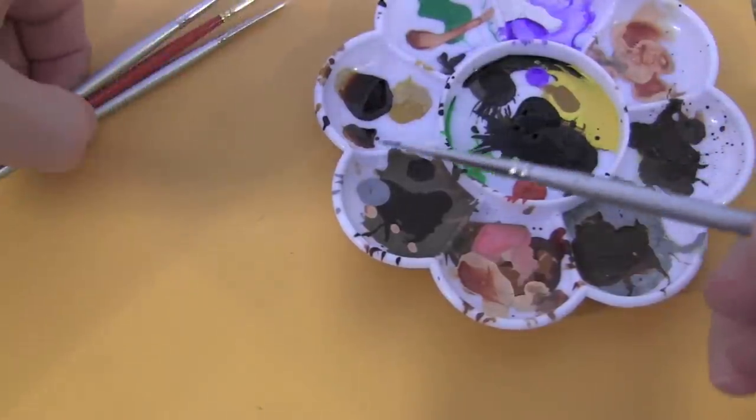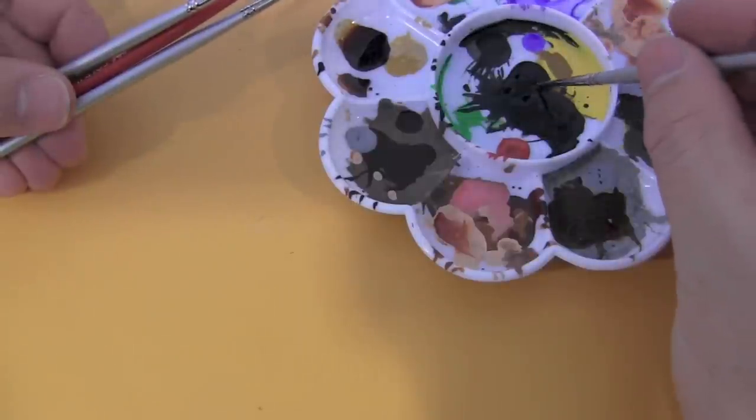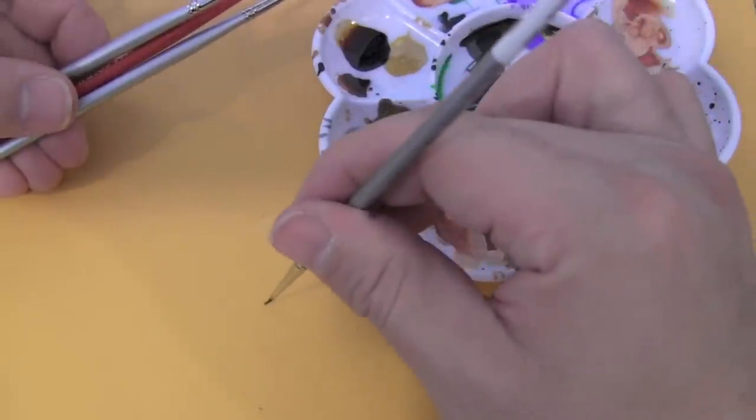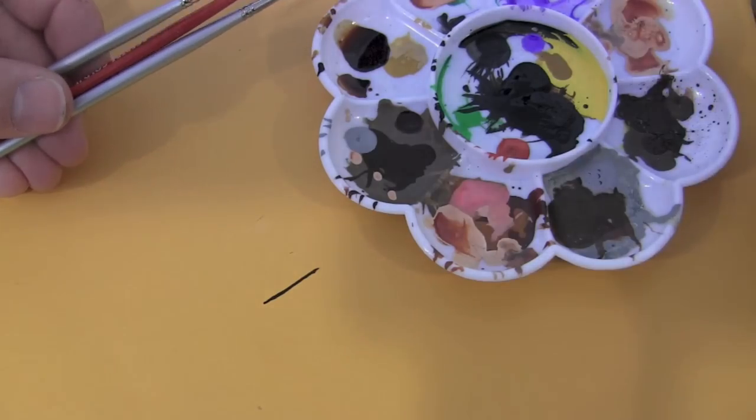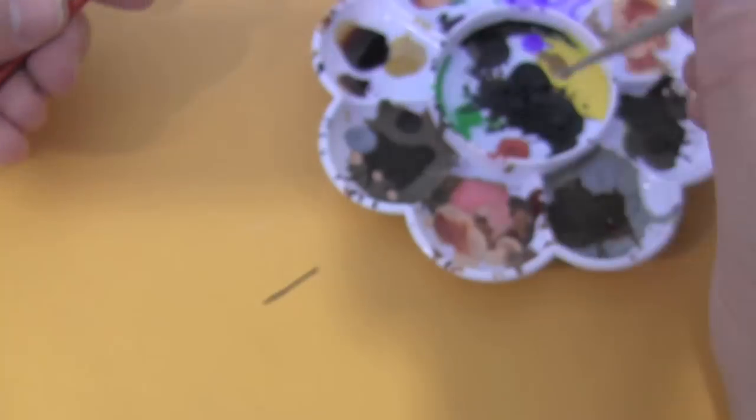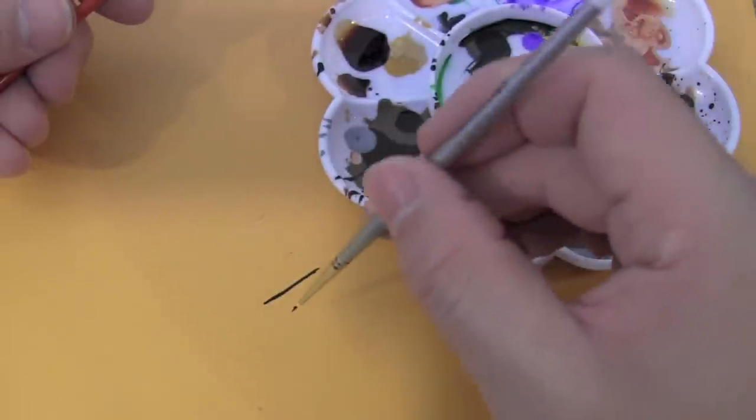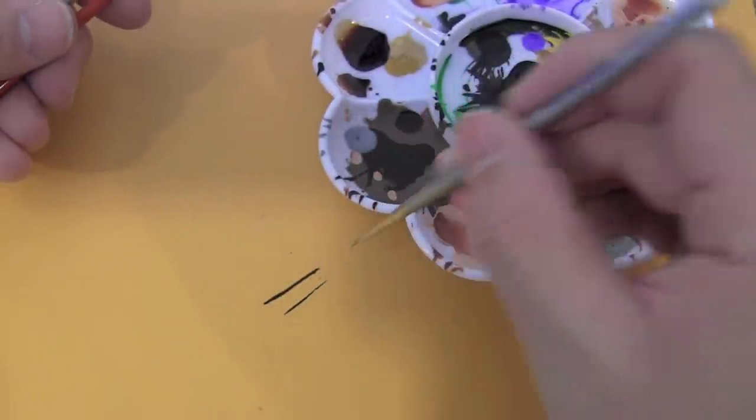We have the regular size brush that was before I cut it. When you put it in some black and you run it you get a thick line. Then when you take the one I just made you get a little bit of a thinner line.